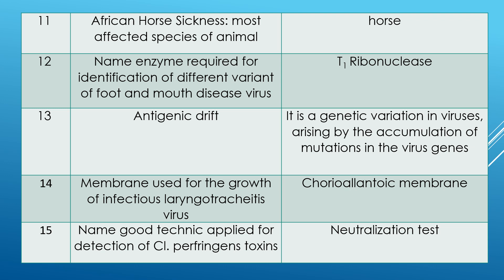Question 13: what is antigenic drift? Answer: it is a genetic variation in viruses arising by accumulation of mutations in viruses. That is antigenic drift.